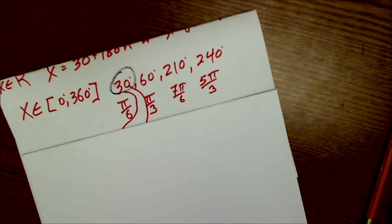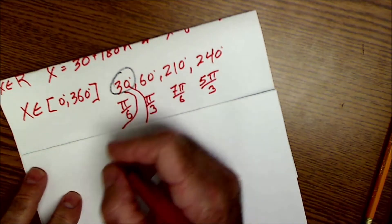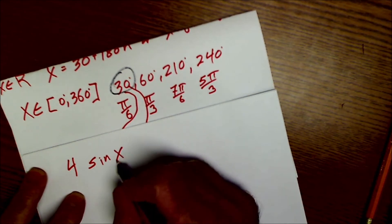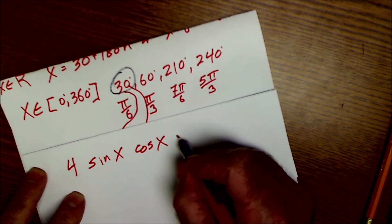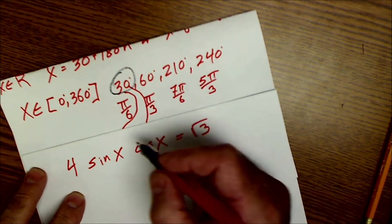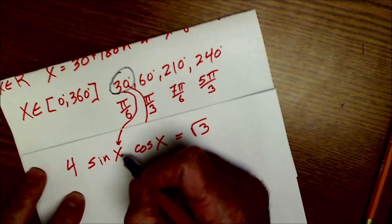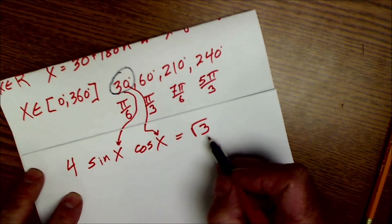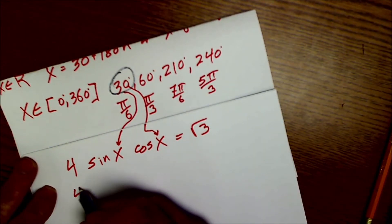Now that I have my solution there, I should be able to take that solution and plug it back into my equation. 4 sine of x, cosine of x, is equal to root 3. So I take that 30 degrees, plug it in there. Take that 30, plug it in there, and it should be equal to root 3.